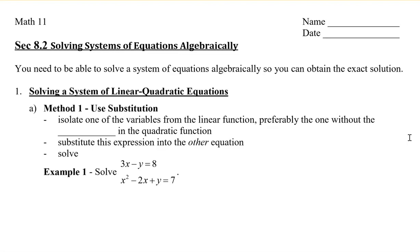For this question, we're going to first isolate one of the variables from the linear function, and preferably the one without the square in the quadratic. So here I can see that I have 3x minus y equals 8. In the other equation, I have x squared minus 2x plus y equals 7. I see that the x is being squared.